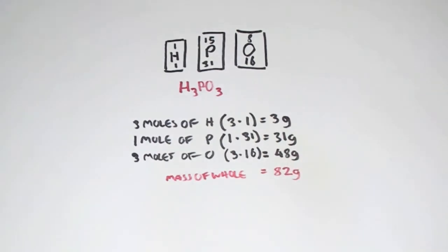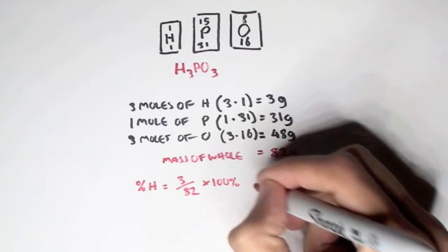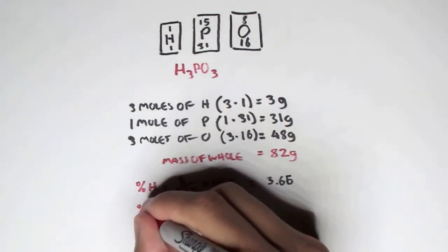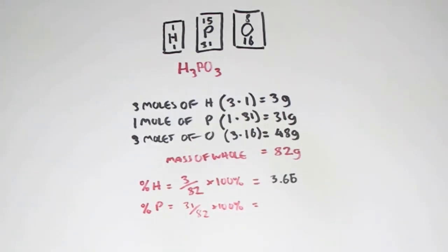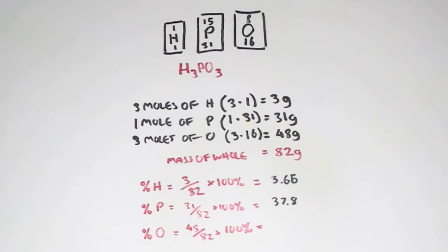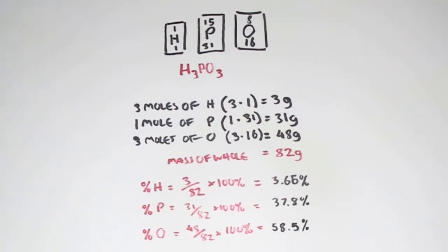We can now calculate the mass percentage of each element. Mass percentage of hydrogen: 3/82 × 100 = 3.65%. Mass percentage of phosphorus: 31/82 × 100 = 37.8%. Mass percentage of oxygen: 48/82 × 100 = 58.5%. I hope you enjoyed this video about the mole concept. Please comment and like. Next, we'll look into stoichiometry.